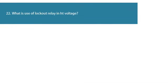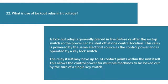Question 22: What is the use of a lockout relay in HT voltage? A lockout relay is generally placed in line before or after the e-stop switch so the power can be shut off at one central location. This relay is powered by the same electrical source as the control power and is operated by a key lock switch. The relay itself may have up to 24 contact points within the unit. This allows the control power for multiple machines to be locked out by the turn of a single key.